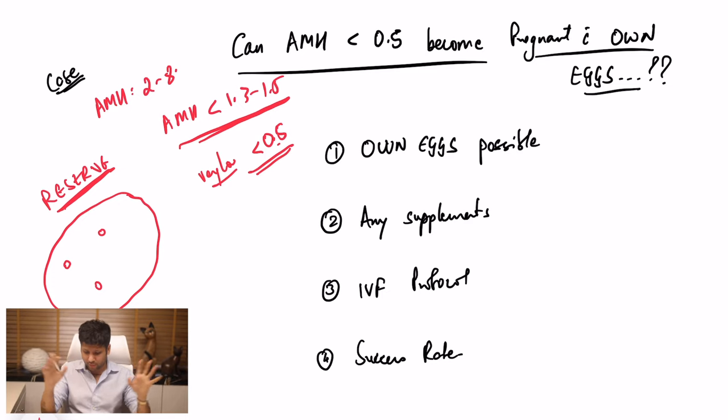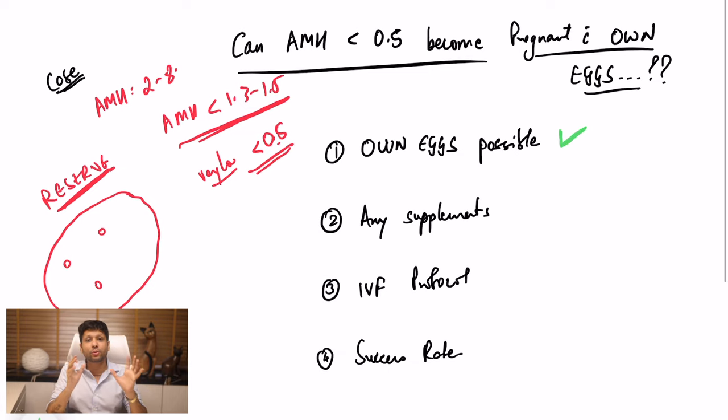So we will answer 4 basic questions. Kya AMH 0.5 ke neeche, khud ke egg se treatment karna possible hai ya nahi? Uska answer hai yes, it is absolutely possible.